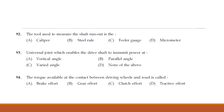Universal joint enables the drive shaft to transmit power at a varied angle — option C. Torque available at the contact between driving wheels and road: the options are brake effort, gear effort, clutch effort, or tractive effort. The answer is option D — tractive effort.